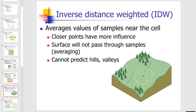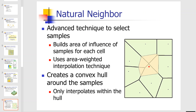IDW stands for Inverse Distance Weighted. It averages the values of samples near a cell — points that are closer together have more influence. The surface will not pass through a sample point by averaging, and it cannot predict local maxima or minima; it only looks at what those sample values are and how close they are together.